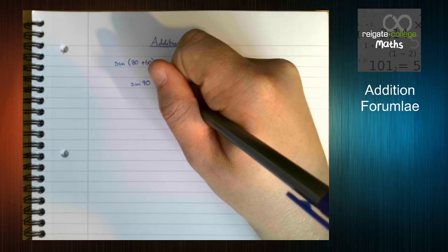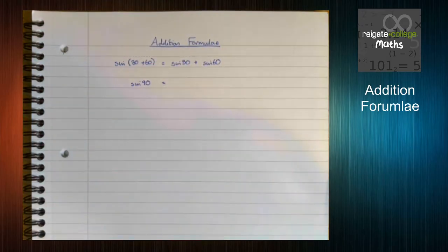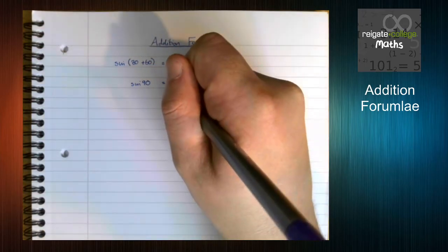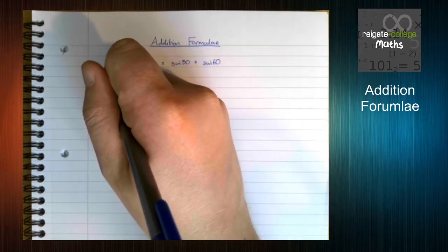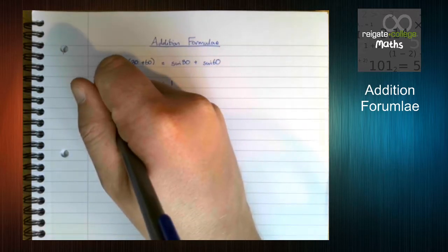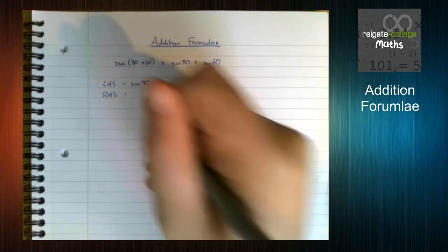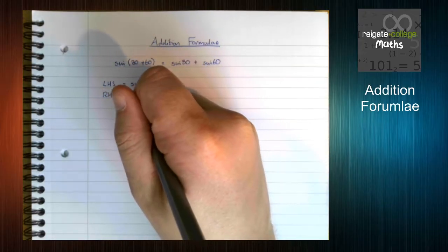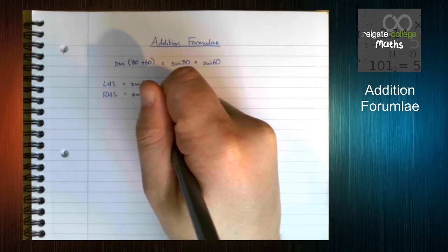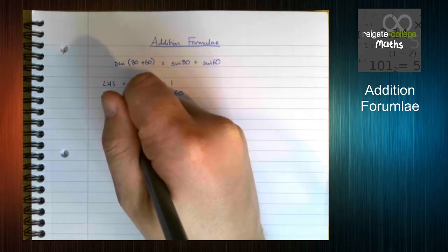So sine 90 is equal to 1. Sine 30, so this is the left-hand side. The right-hand side is sine 30 plus sine 60.